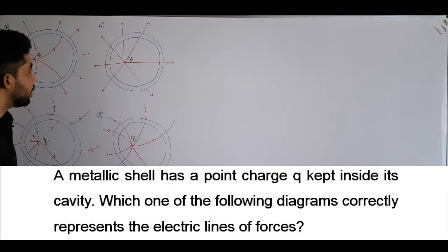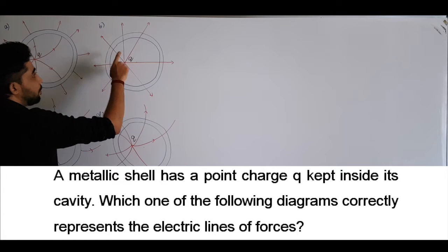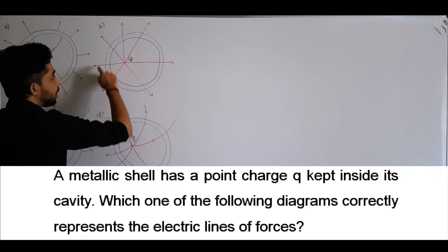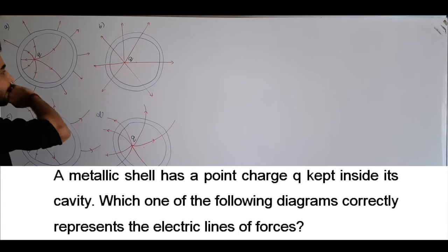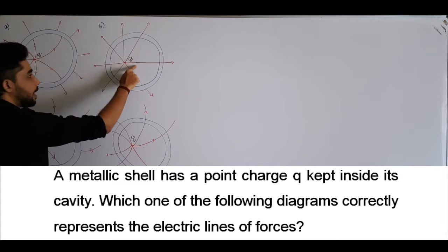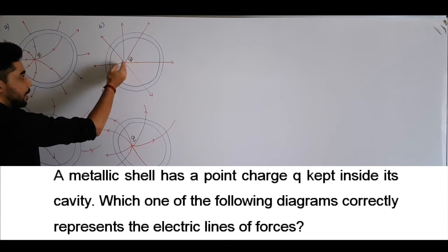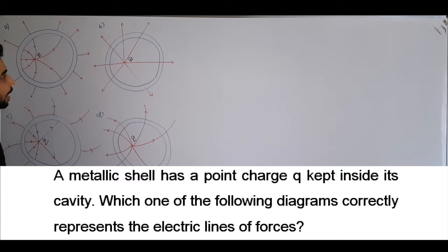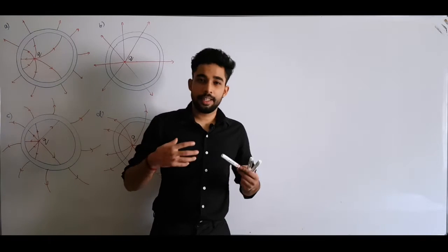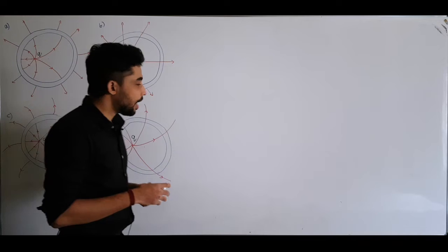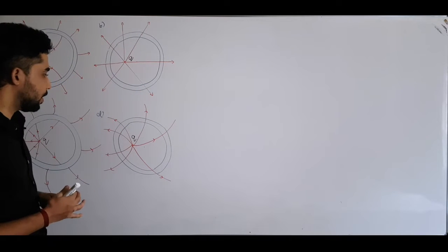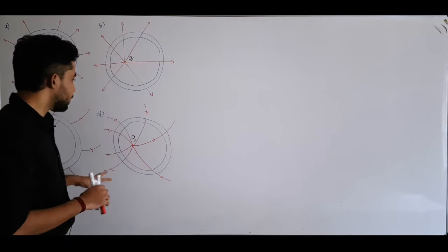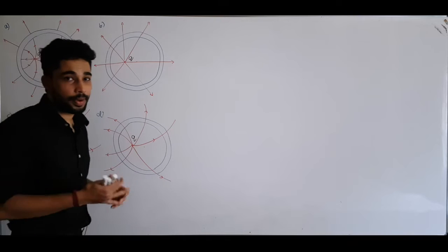We have a point charge Q placed inside the cavity of a conducting shell, not at the center but at some off-center position, and we're asked which of the following would accurately represent the electric field. We'll work through this in detail so that whatever they ask related to this, you'd be able to answer it.